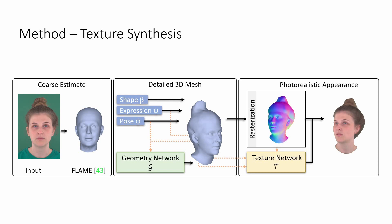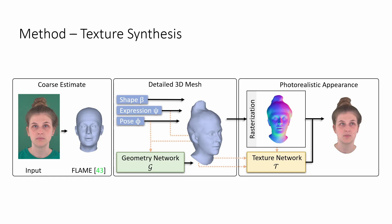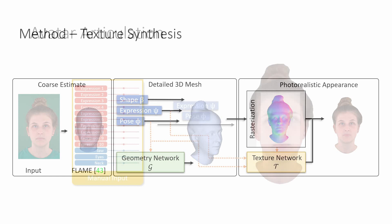A second feedforward network T synthesizes the appearance of the avatar by predicting a photorealistic texture. Similarly to G, T is conditioned on the pose, but also on the expression and patches of surface normals. This enables view- and expression-dependent effects and allows plausible synthesis of the inner mouth region, for which no explicit geometry can be reconstructed.